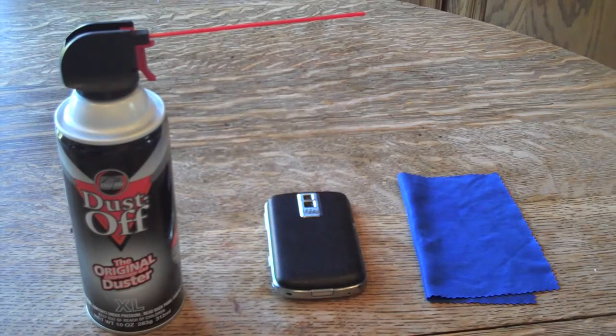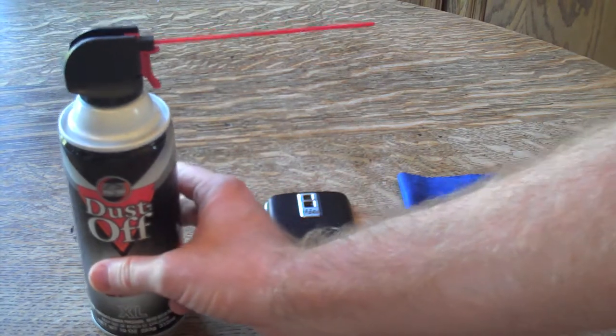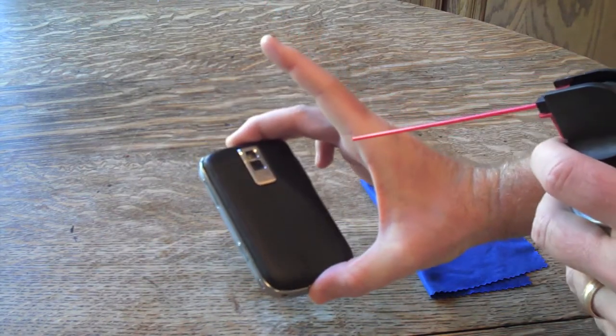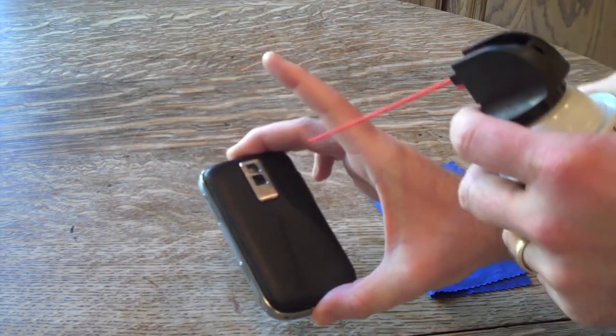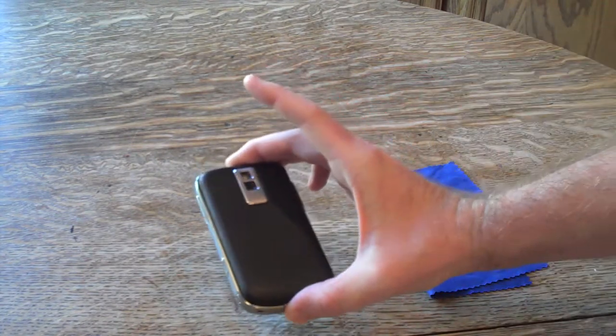The first thing we're going to do here is use a can of air to lightly clean out any loose debris that is around the BlackBerry. So what you do is keep it a few inches away from the BlackBerry device and just spray lightly all around to clean out any loose debris that's inside there.